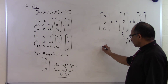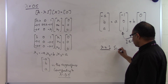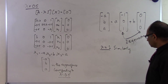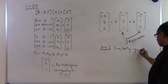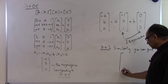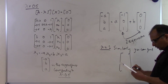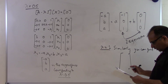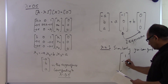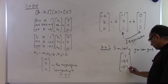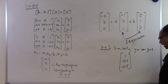Similarly, for lambda equal to 1, following the same procedure, you can find that the eigenvector corresponding to lambda equal to 1 is: 1, minus 0.5, and minus 0.5.